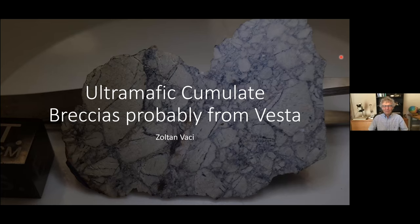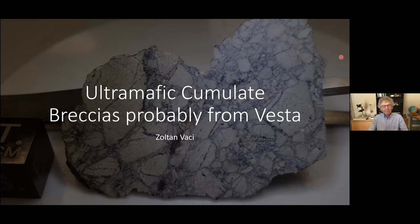Zoltan is a PhD student nearing the completion of his PhD — we'll have that sewn up in the spring. He did a master's degree here and then decided to stay on for a PhD. He's been working on Martian meteorites and ungrouped achondrites primarily. Without further ado, I'll hand it over to Zoltan to tell us about ultramafic cumulate breccias, probably from Vesta.